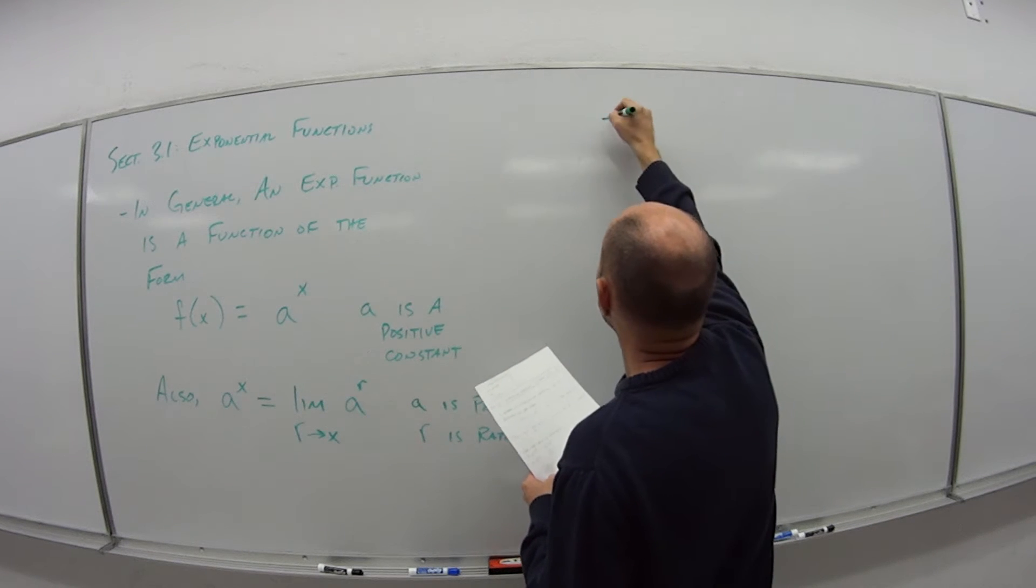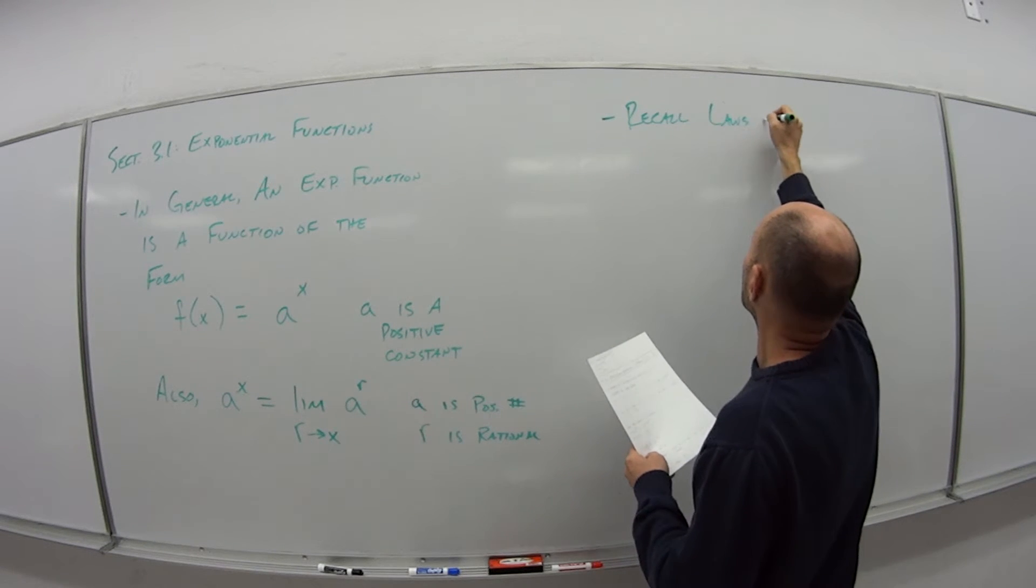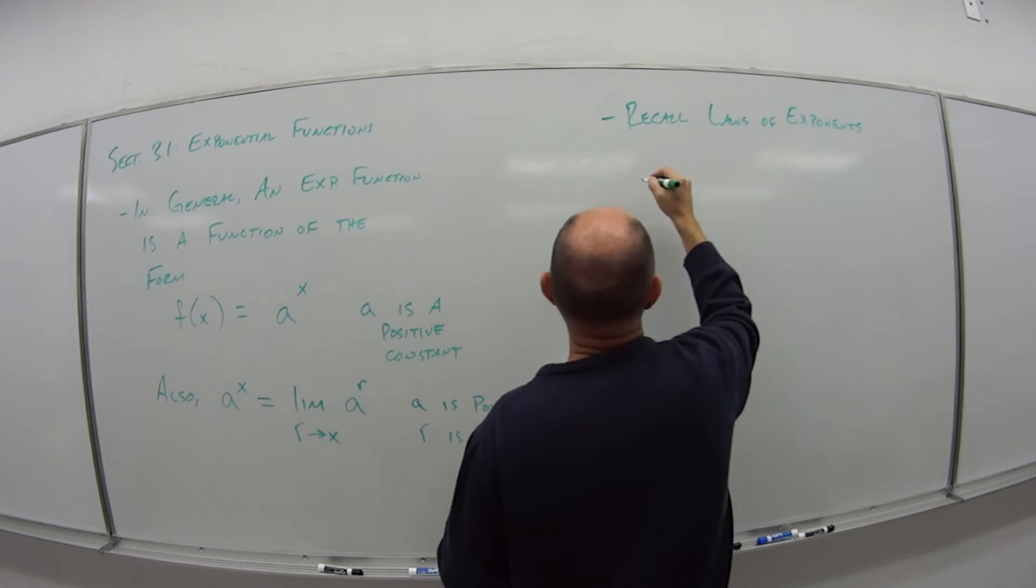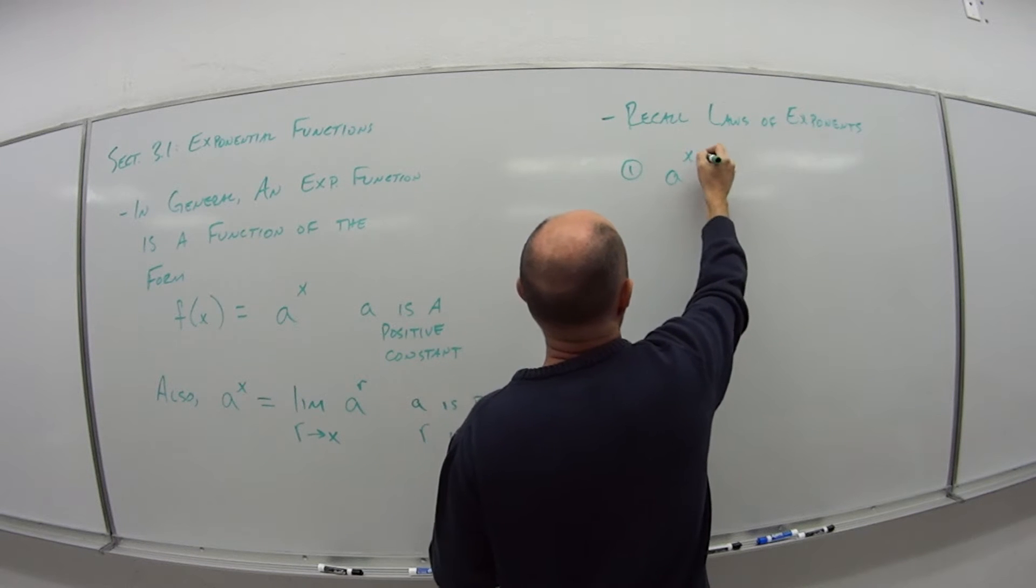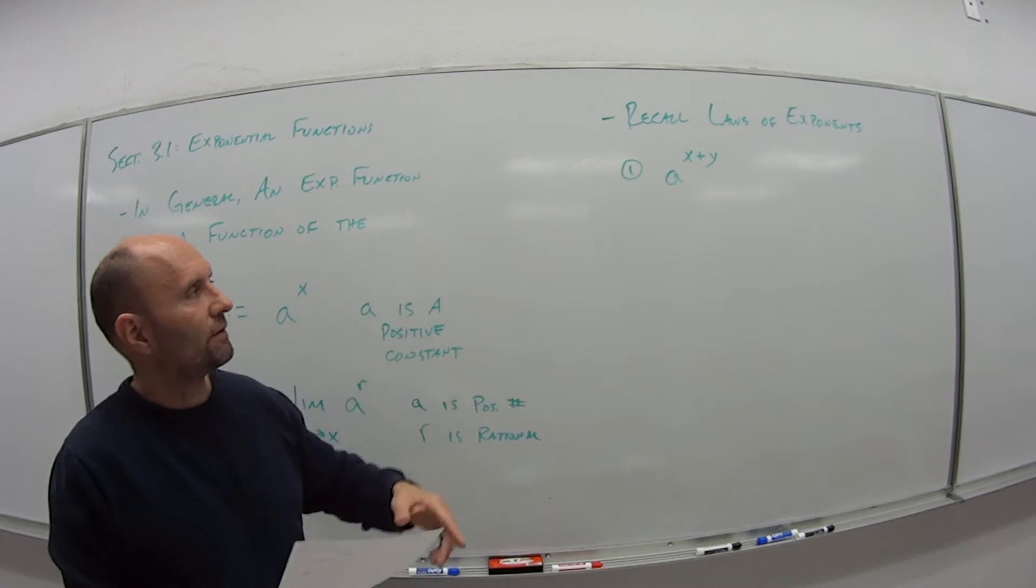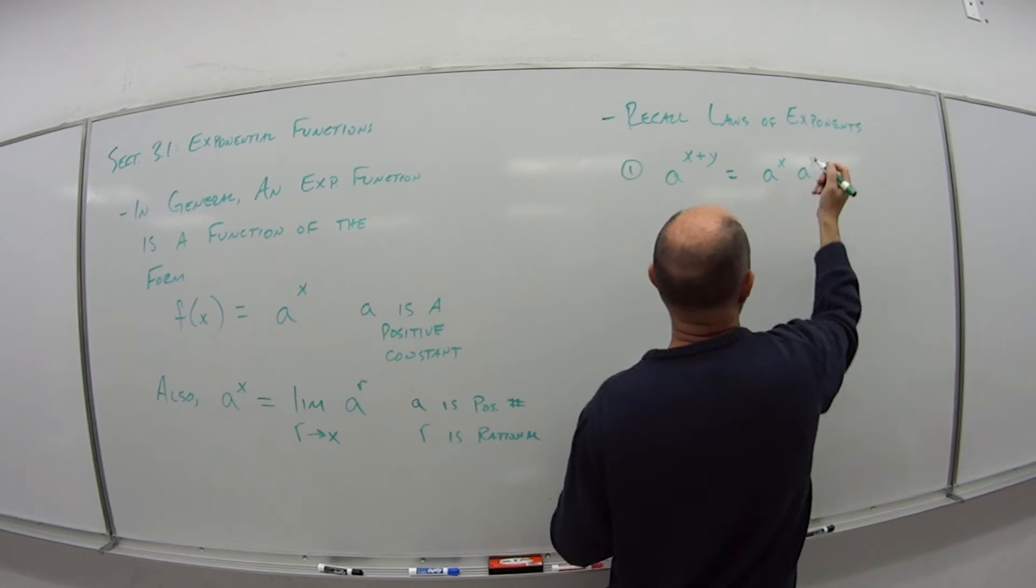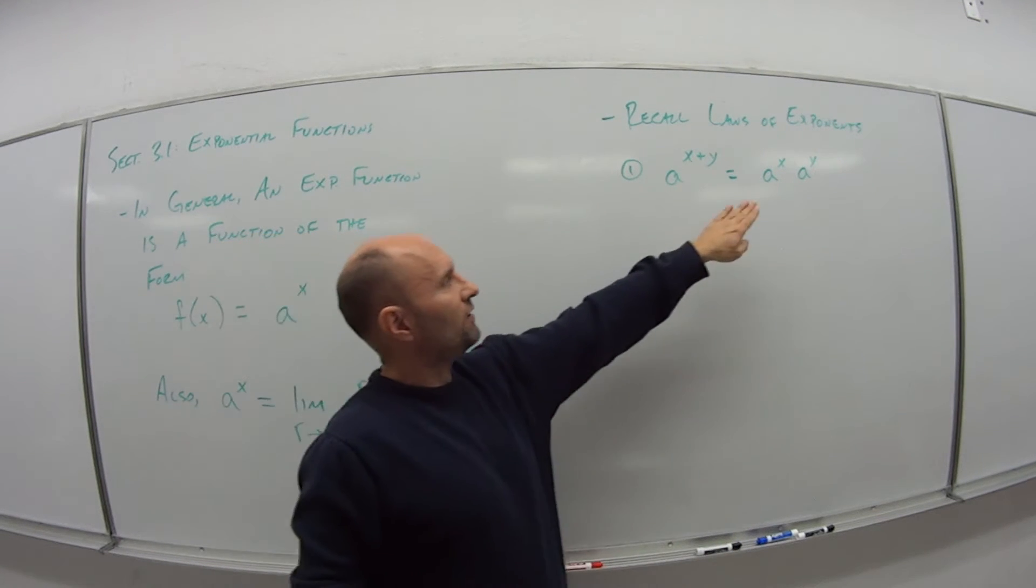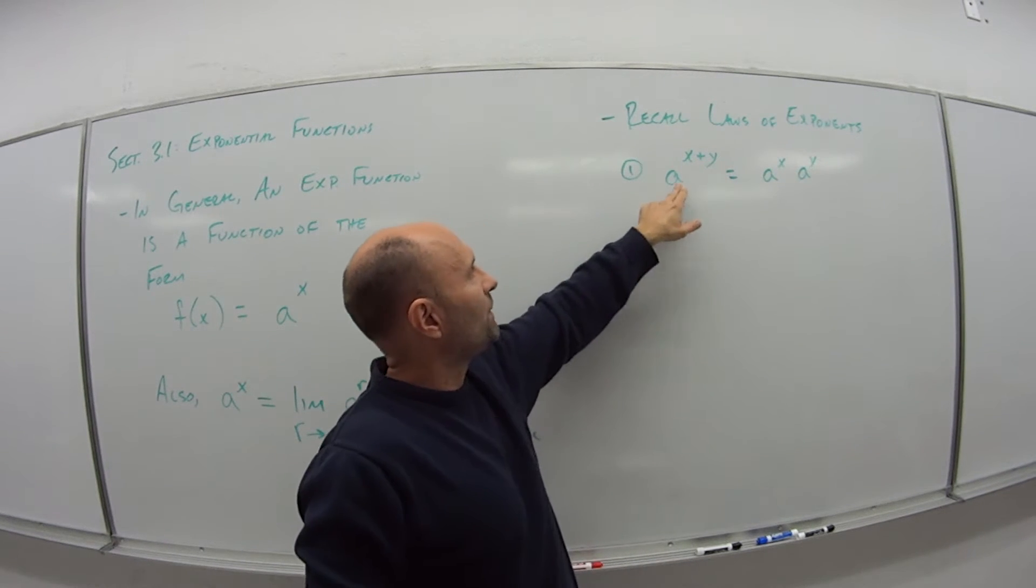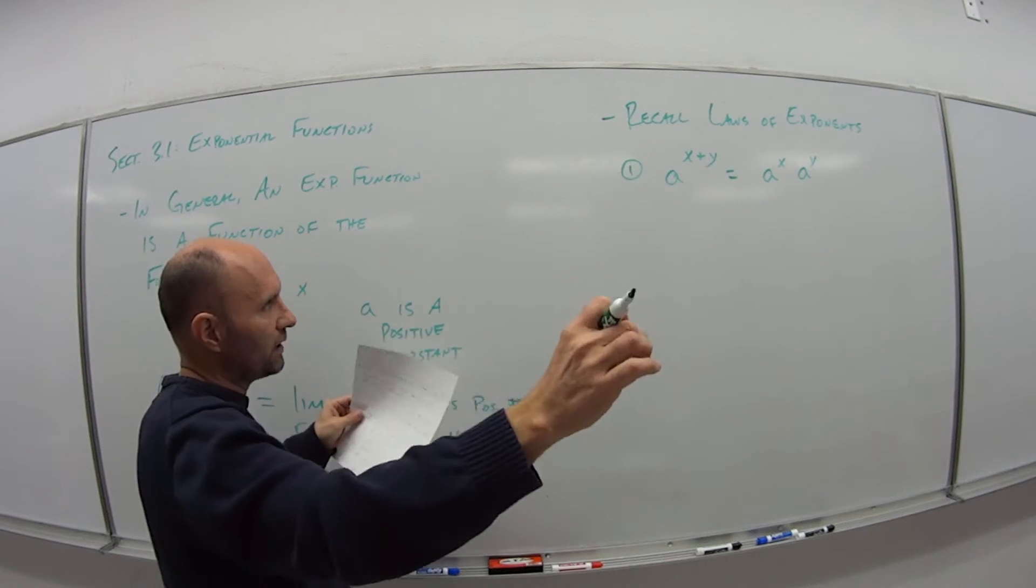So recall the laws of exponents. The first one is if I have a to the x plus y power, this is a to the x times a to the y. And these go both ways, so if I had a to the third power times a to the fifth power, that's the same as a to the 3 plus 5 or a to the eighth. So you can either break it apart or you can put them together.